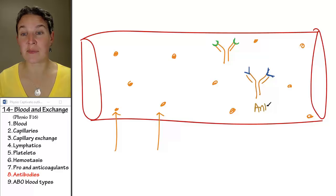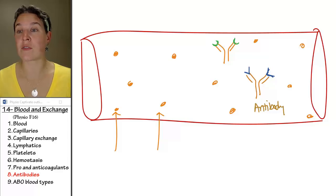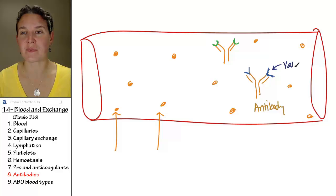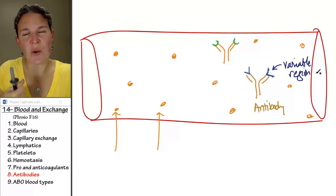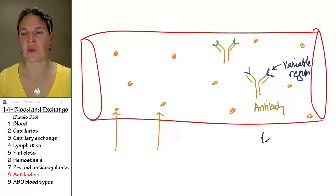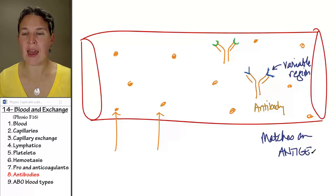Antibodies are plasma proteins that are involved in the immune response. They have a variable region that matches to an antigen, and we have to define what is an antigen.